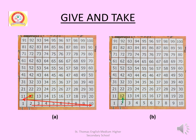This is the number table of your textbook. This table has 10 rows and 10 columns, so it contains numbers from 1 to 100. We will use this number table to add and subtract numbers.